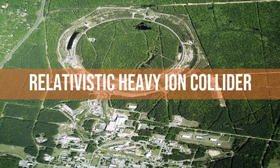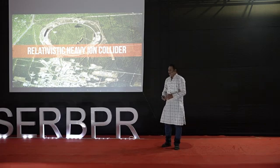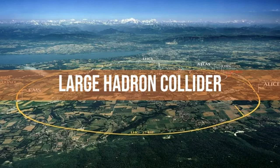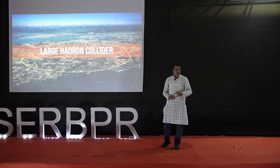One such facility is the Relativistic Heavy Ion Collider at Brookhaven National Laboratory in the United States. The other, larger facility is the Large Hadron Collider at CERN in Geneva, Switzerland. They smash ions and protons to melt matter into its fundamental units to study its properties. This accelerator has a 27-kilometer circumference — it's a technological marvel, the world's largest particle accelerator. A proton covers these 27 kilometers 11,000 times in one second — that's the speed with which we smash the ions and protons.